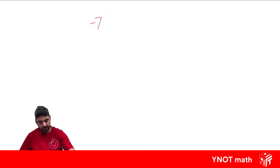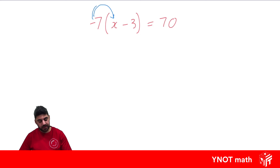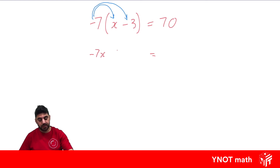Let's have a look at a pretty tricky one: negative 7 outside of x minus 3 equals 70. This one's really important because the signs in front of terms belong with them. So this 7 is a negative 7, and this 3 is a negative 3. We're doing negative 7 times x and negative 7 times negative 3. Negative 7 times x gives us negative 7x, and negative 7 times negative 3 gives us positive 21. That's where a lot of people make mistakes — they forget that multiplying two negatives gives a positive.